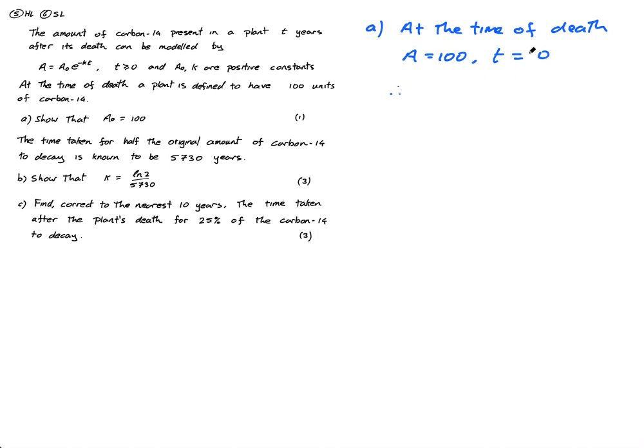Therefore, I can sub this into my formula. 100 equals A0 E to the negative K times 0, which is going to be E to the 0, which is 1. Therefore, 100 equals A0. I'm going to write Q, E, D, which means I've shown what they want me to show.